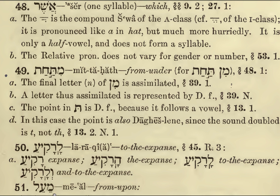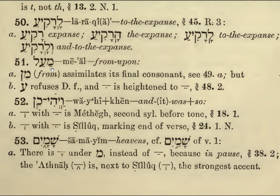Me'al. Me'al: from upon. Two vowels here — Me and Ngal. From upon. This is a contraction of Min-Al, but the N of the Min assimilates its final consonant and so it disappears. But Ayin does not take the Dagesh Forte, so you can't have a Dagesh Forte here. This would have a short vowel, but it's an open syllable, and so it goes from E to a longer E, giving it weight. So Me'al.